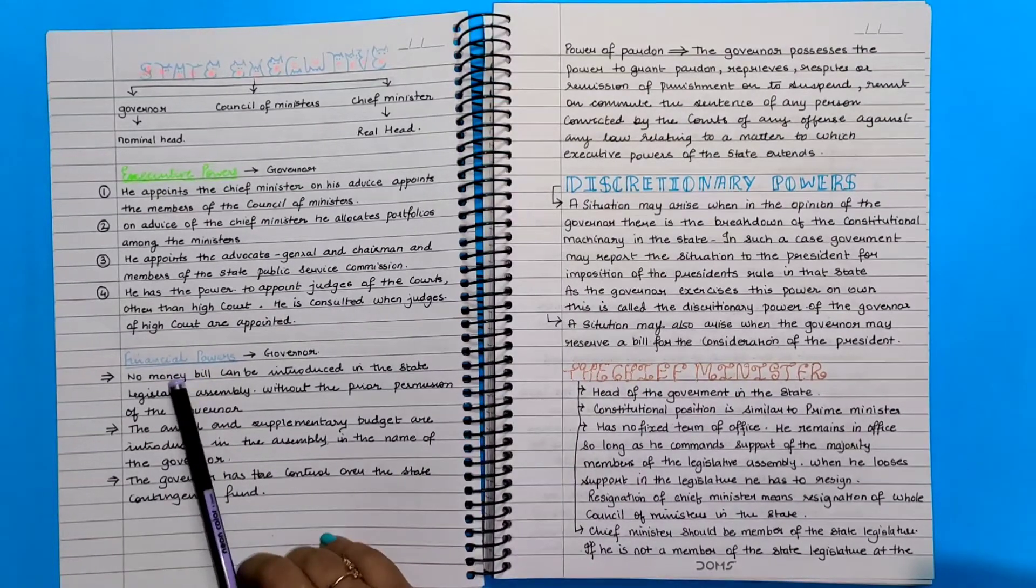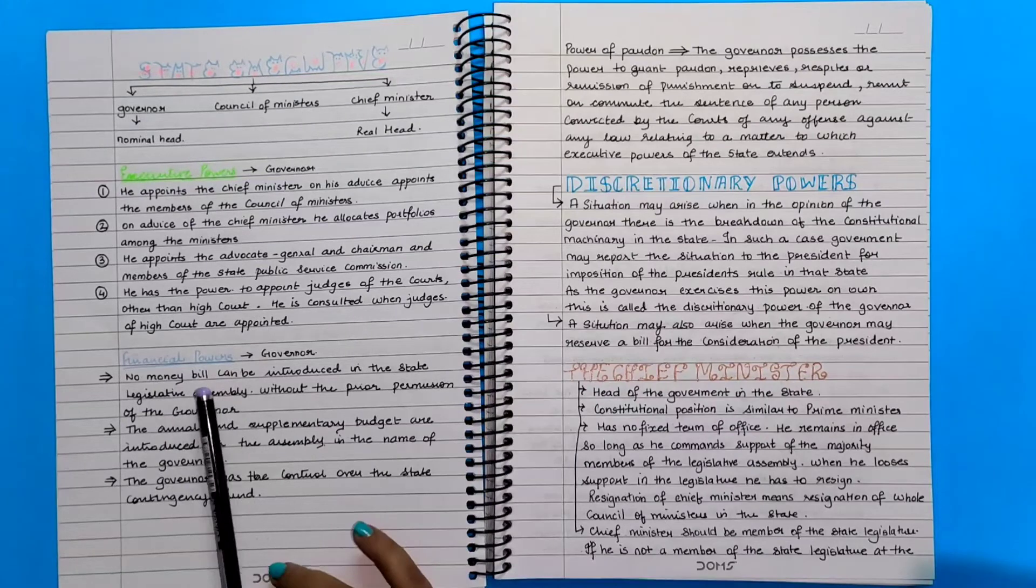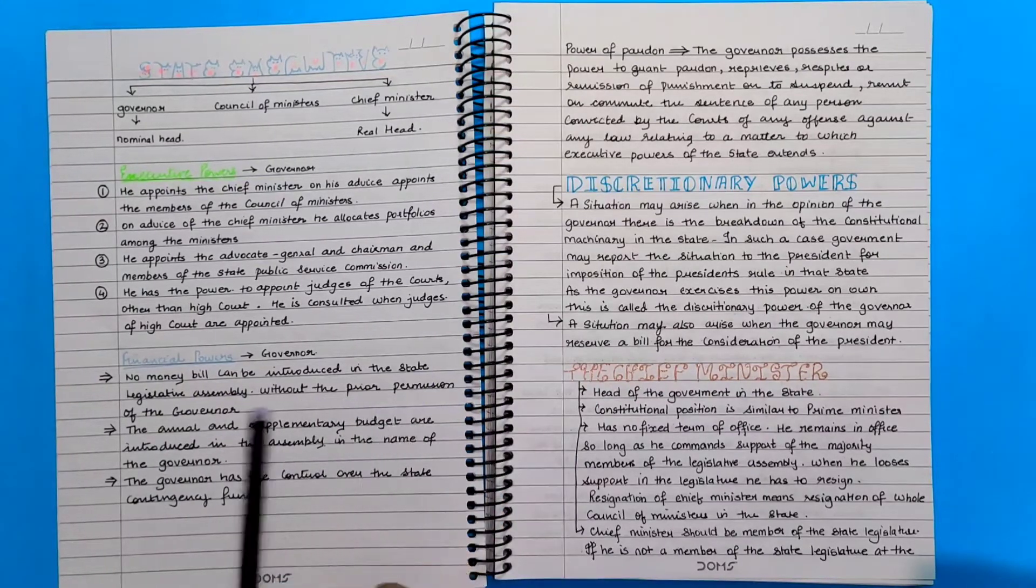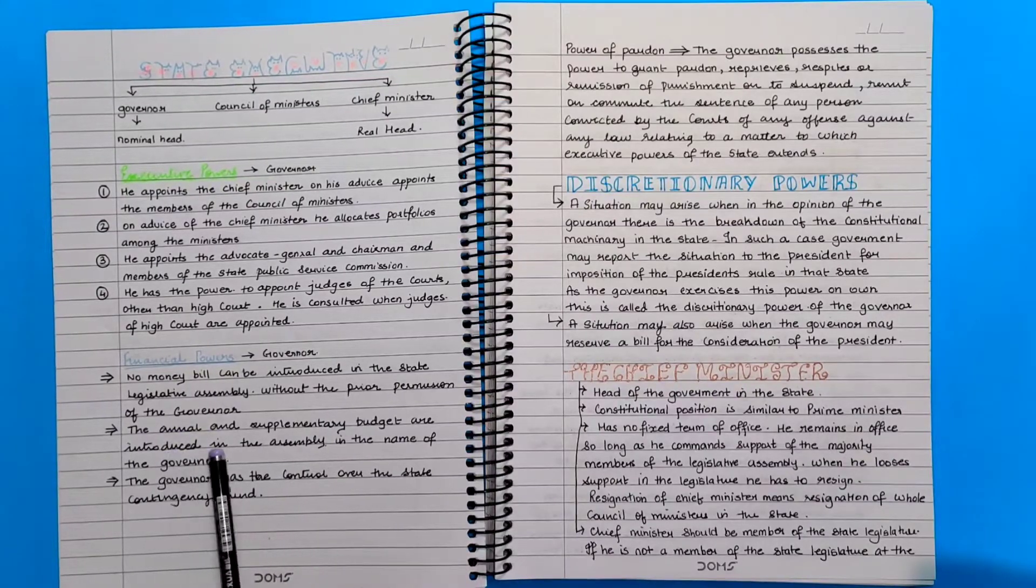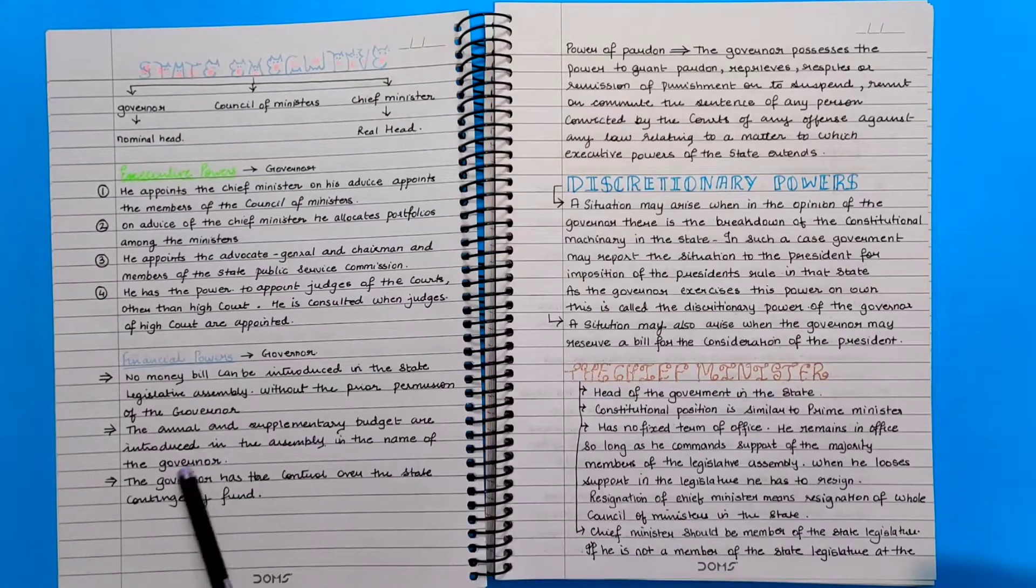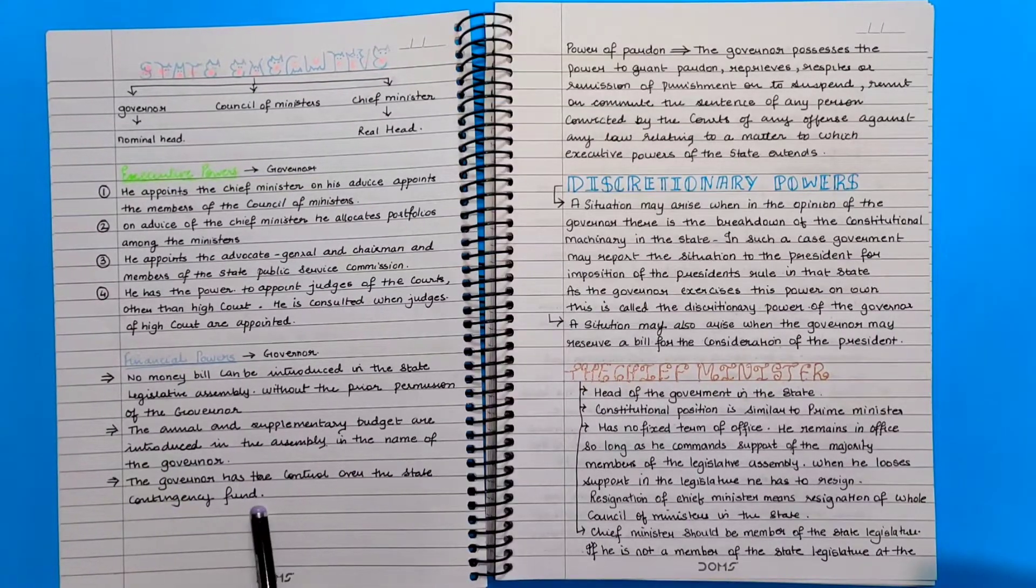Financial powers of the governor: No money bill can be introduced in the state legislative assembly without the prior permission of the governor. The annual and the supplementary budget are introduced in the assembly in the name of the governor. The governor has the control over the state contingency fund.